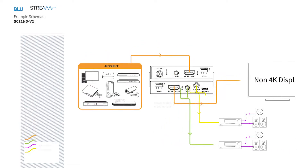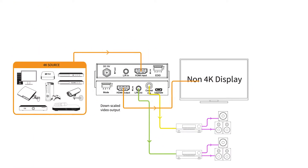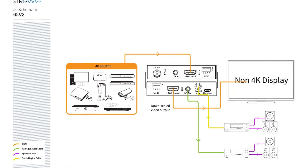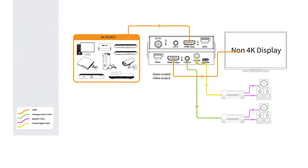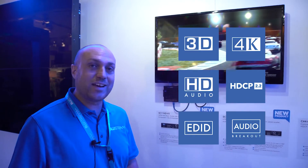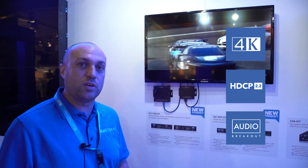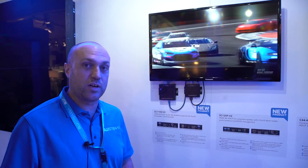One of our new products is the SC11HD V2. This gives us the ability to take a 4K 50 or 60 high frame rate signal with 4:2:0 color depth and down-convert it to 1080p for use on legacy screens.